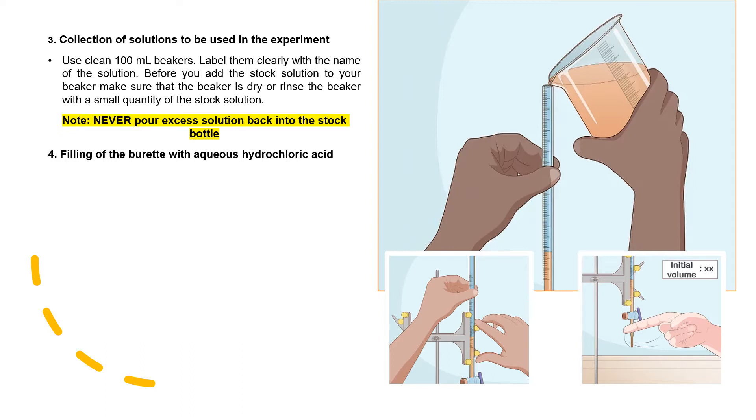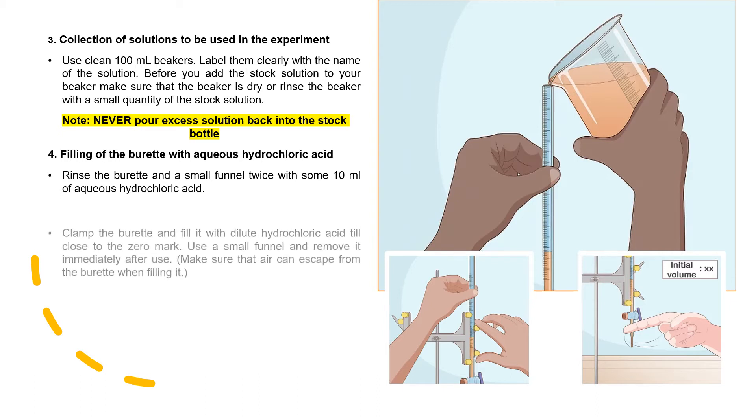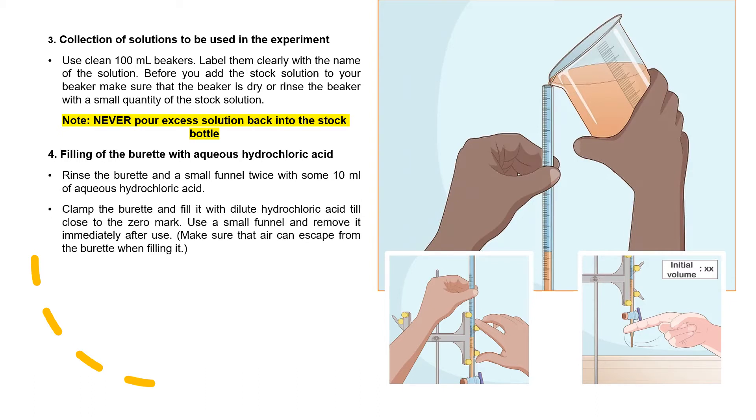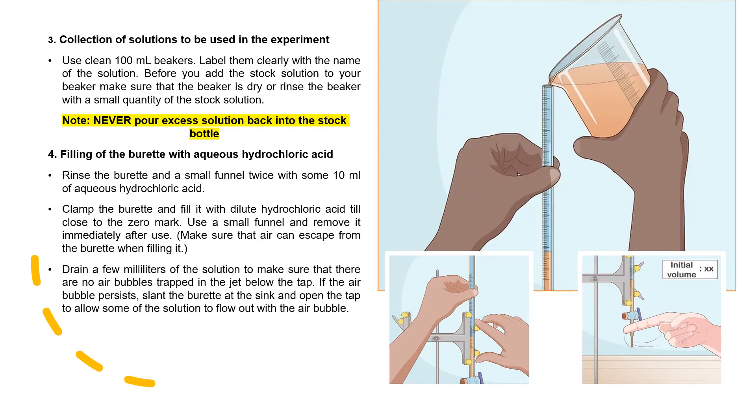Filling of the burette with aqueous hydrochloric acid. Rinse the burette and a small funnel twice with some 10 ml of aqueous hydrochloric acid. Clamp the burette and fill it with dilute hydrochloric acid till close to the zero mark. Use a small funnel and remove it immediately after use. Then drain a few millimeters of solution to make sure that there is no air bubble trapped in the jet below the tap. If the air bubble persists, slant the burette and sink and open the tap to allow some of the solution to flow out of the air bubble. Then you must take the initial burette reading to 0.01 ml. To avoid parallax error, your eye should be level with bottom of the meniscus when you are taking the reading.